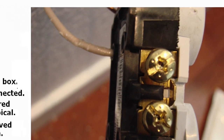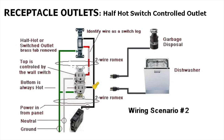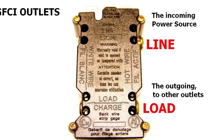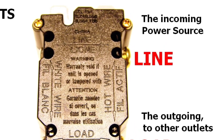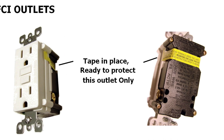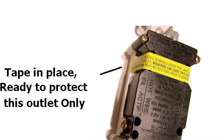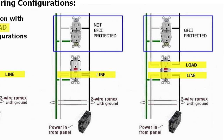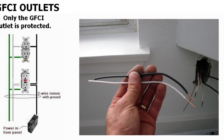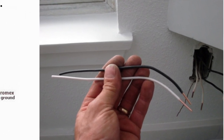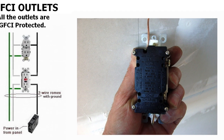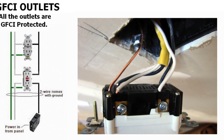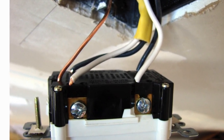We provide wiring diagrams for switched outlets in the kitchen used for garbage disposal and a shared outlet for garbage disposal and a dishwasher. We show how GFCI outlets are wired up, explaining the line and load connections with wiring diagrams and showing how to pigtail out for different applications, put the wiring together, attach it to the GFCI, and mount it.